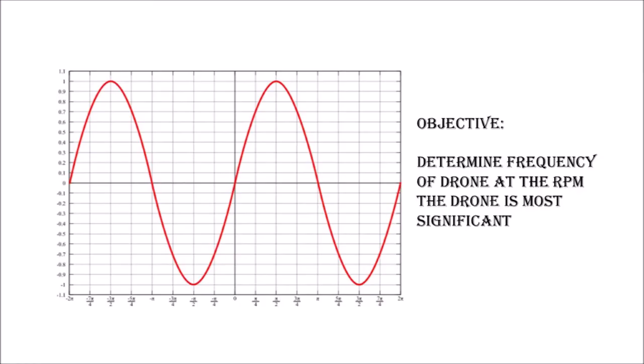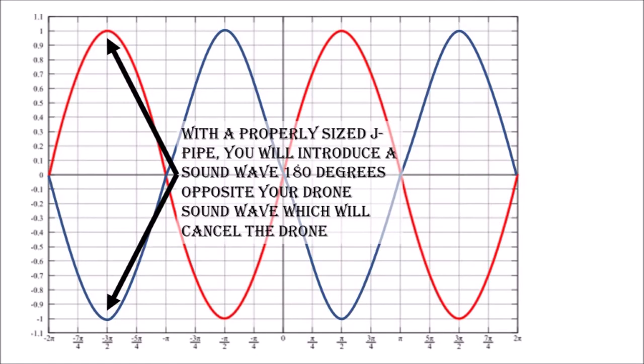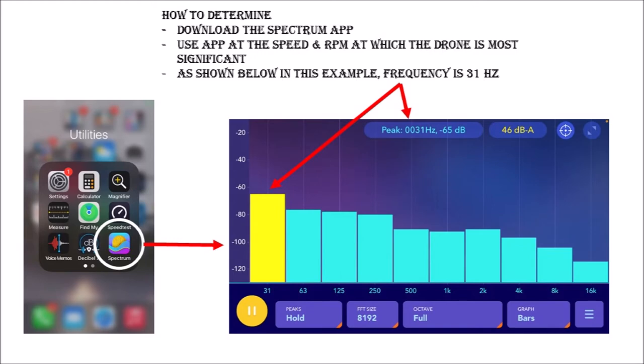This curve represents the loudest, most obnoxious frequency. What you want to do is find that frequency and then create a sound wave that is 180 degrees out of sync with it. The best way to do that is to download an app onto your phone to determine what that frequency is. As I mentioned in my first video, I recommend the Spectrum app — I don't own it, I didn't develop it, it's just very helpful. You can see in that yellow bar the loudest, most obnoxious frequency — in this example it's 31 Hz.